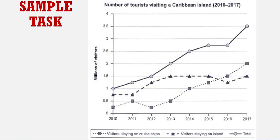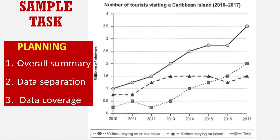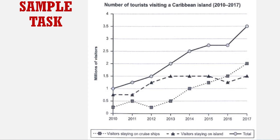Let's take a look at today's sample task — you might have seen this before. It's from the Cambridge books of past test papers and it's about tourists visiting a Caribbean island. When we're planning a task we should be thinking about three main things: what's the overall summary, how am I going to divide my data into paragraphs to make it more meaningful to the reader, and how much data is there and how are we going to cover it. With change over time tasks, especially line graphs, there can be a lot of data. We're essentially looking to describe about 10 to 12 features.